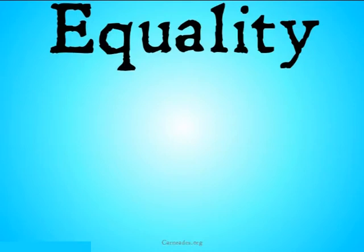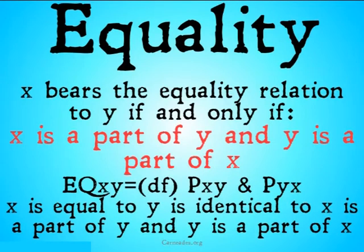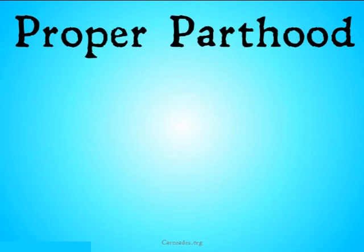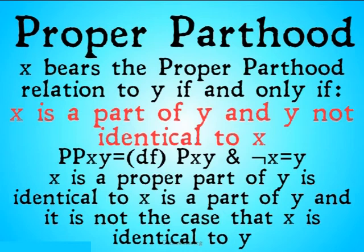There are some other relations involved in Mereology other than just the parthood relation that need to be understood, which can be defined in terms of the parthood relation. One of them is equality: X bears the equality relation to Y if and only if X is a part of Y and Y is a part of X. We'll represent that as EQ(X,Y) =def P(X,Y) ∧ P(Y,X). The proper parthood relation — this is the relation with that more intuitive sense — X bears the proper parthood relation to Y if and only if X is a part of Y and Y is not identical to X. We define that as PP(X,Y) =def P(X,Y) ∧ ¬(X=Y). Note that we use sentence negation here — we're saying it's not the case that X is identical to Y, not that X is identical to not-Y. Check out my video on Meinong's Jungle if you're confused by that.